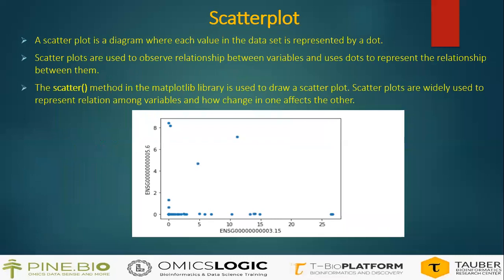Scatterplot: a scatterplot is a diagram where each value in the dataset is represented by a dot. They are used to observe relationships between variables and use dots to represent those relationships. The scatter method in the matplotlib library is used to draw a scatterplot and is widely used to represent the relation among variables and how a change in one affects the other. As we can see in the picture, we have two genes — one on the x-axis and one on the y-axis — and it represents the relationship between the two of them.